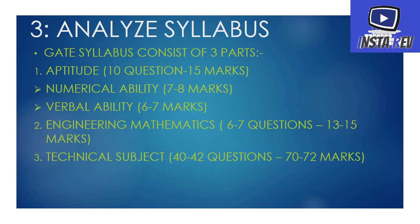In aptitude, there are 10 questions of 15 marks weightage. It has two sections: numerical ability (quantitative aptitude and reasoning, worth 7–8 marks) and verbal ability (worth 6–7 marks). In engineering mathematics, there are 6–7 questions worth 13–15 marks. Aptitude and engineering mathematics are the two most important subjects — they determine your rank. Cracking GATE is easy, but cracking a good rank is tough. If you want to get into a PSU or IIT, you must study these smartly.